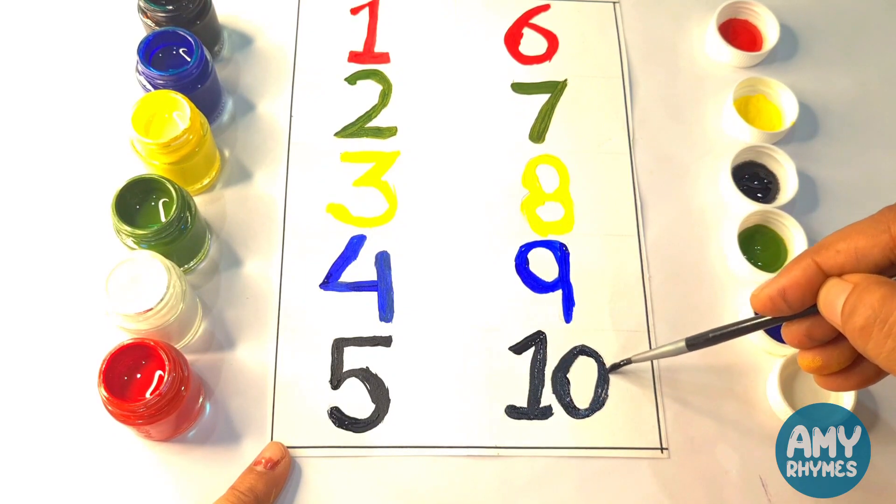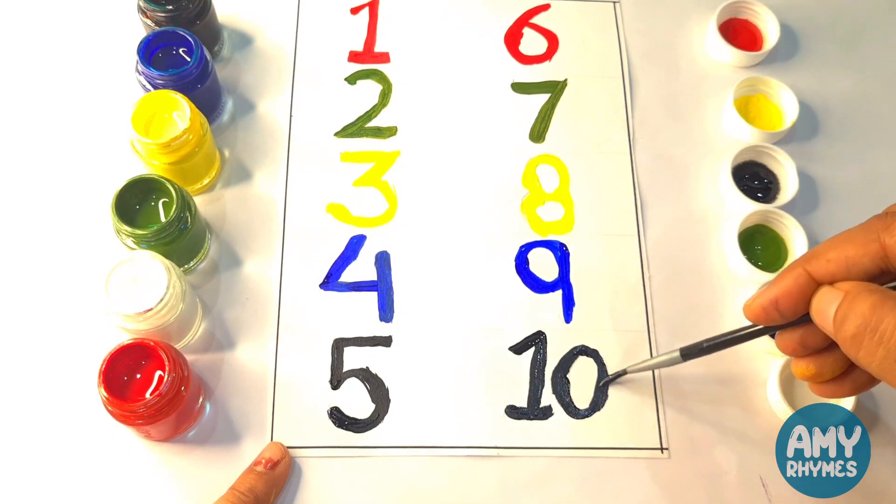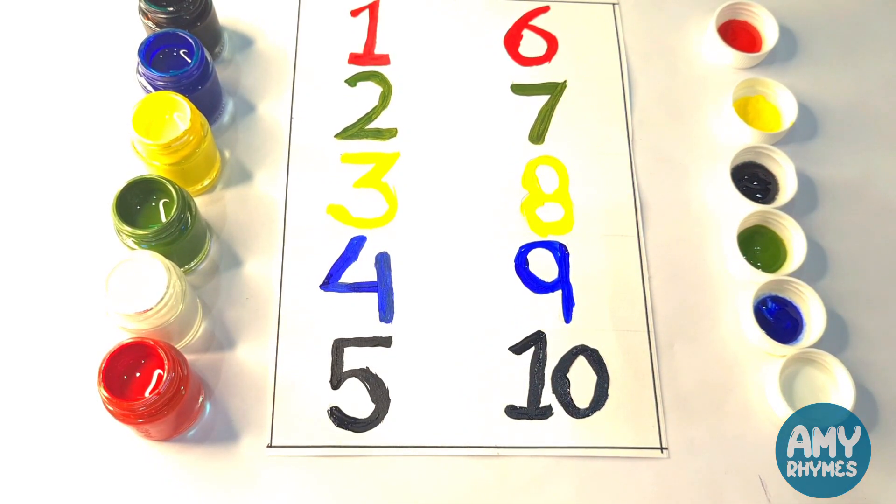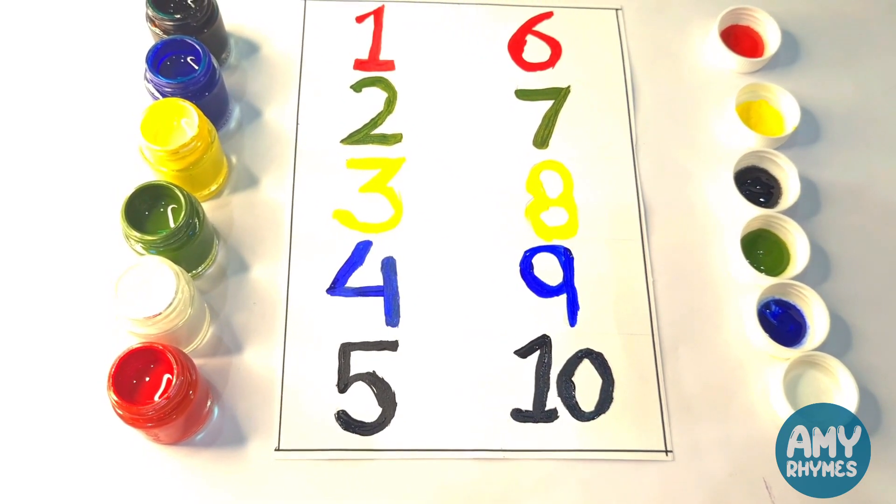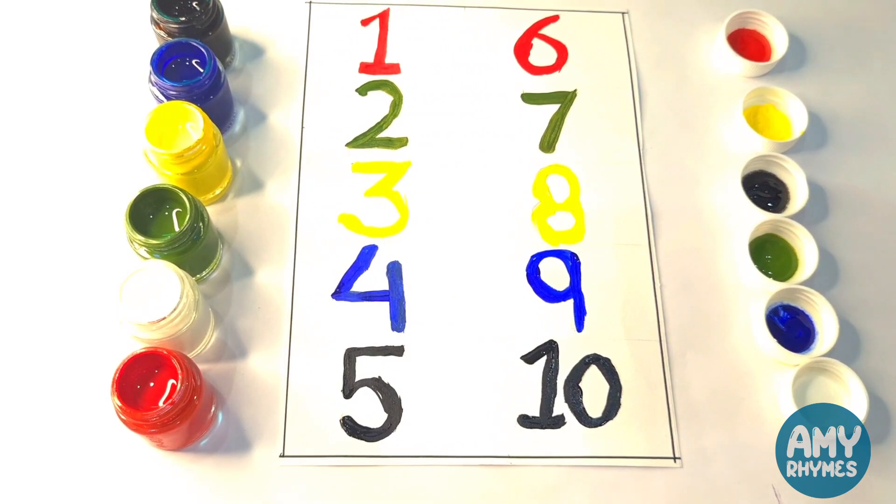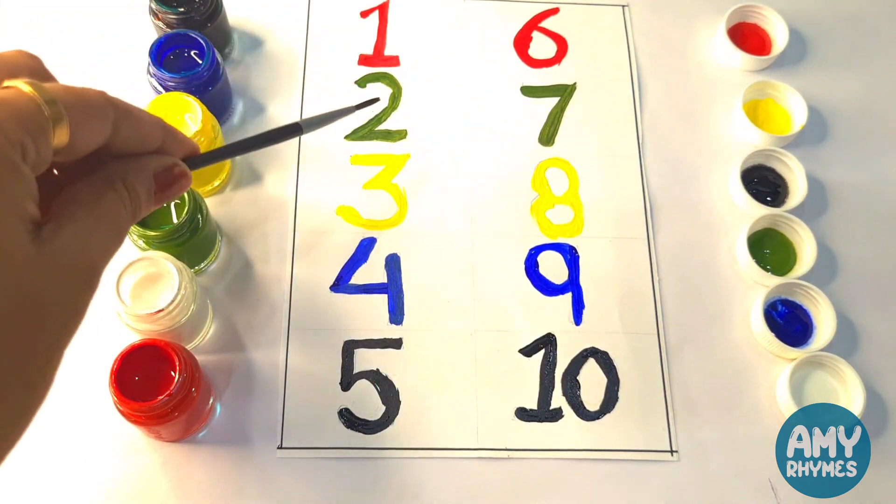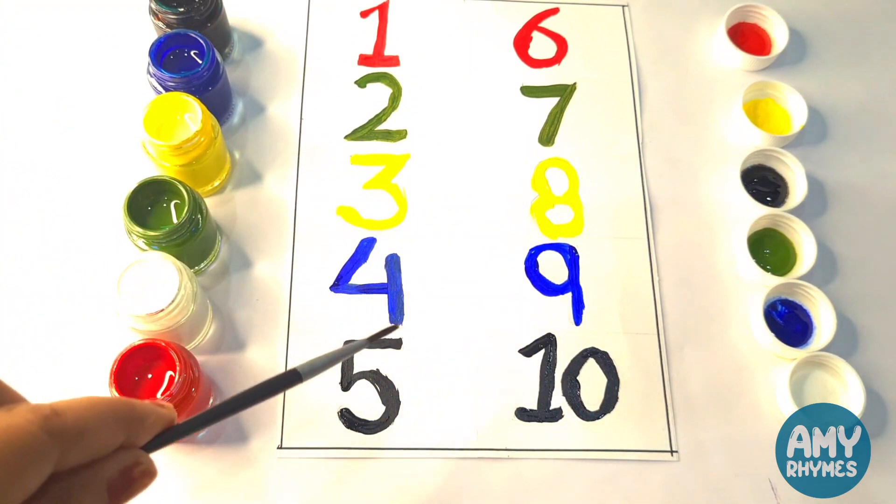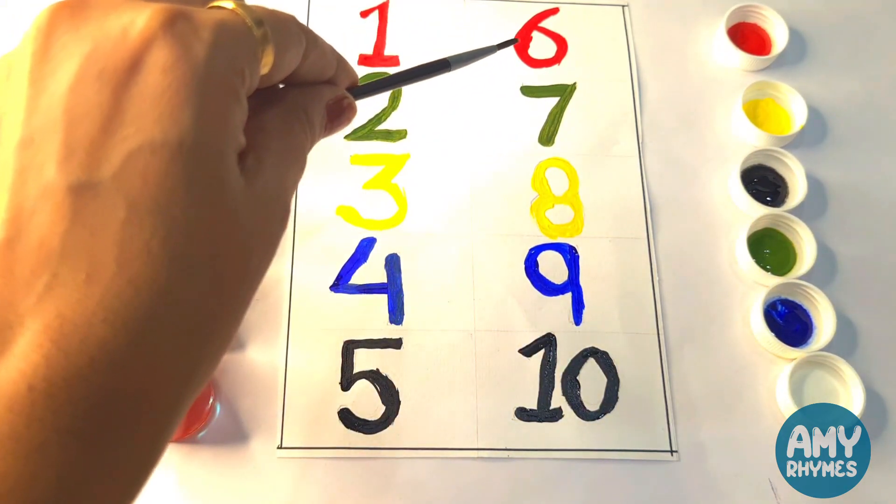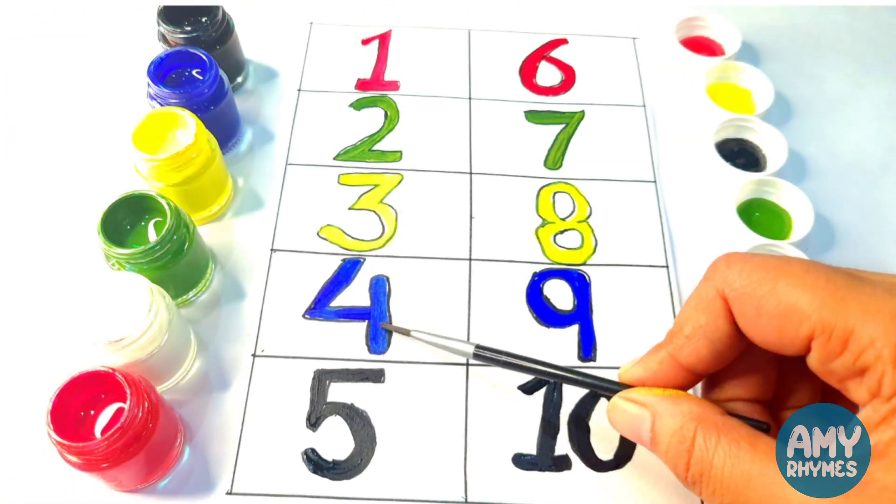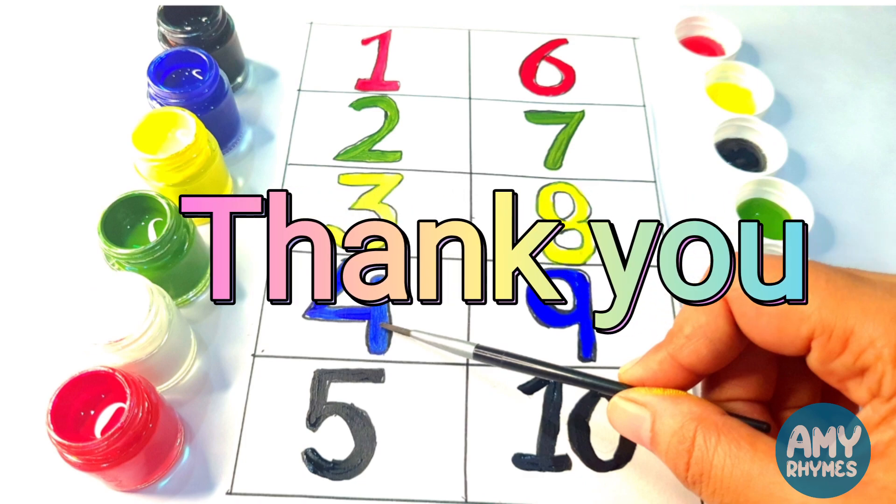It's done. Wow, it's very simple and very easy. You can also draw and paint numbers with different colors. Today we learned one, two, three, four, five, six, seven, eight, nine, ten. Thank you.